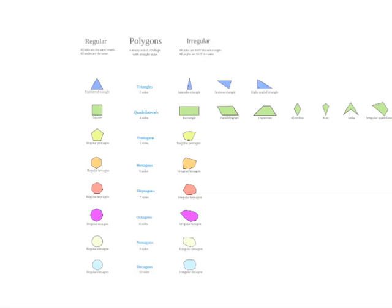Then we split them into either being regular shapes or irregular. So a regular polygon is a polygon which has all the sides the same length, and all the angles are the same.